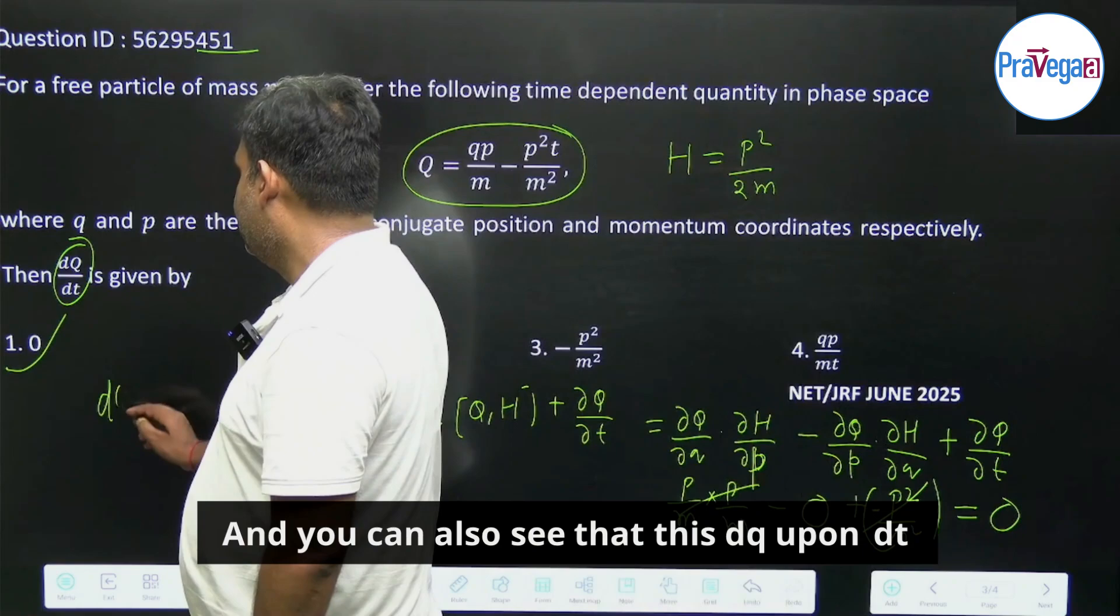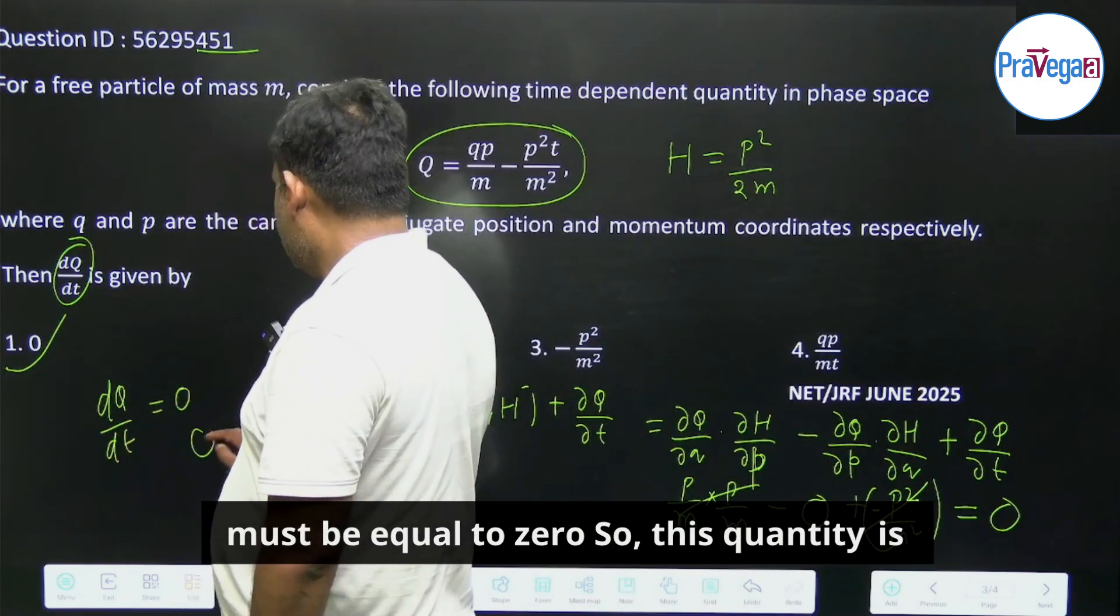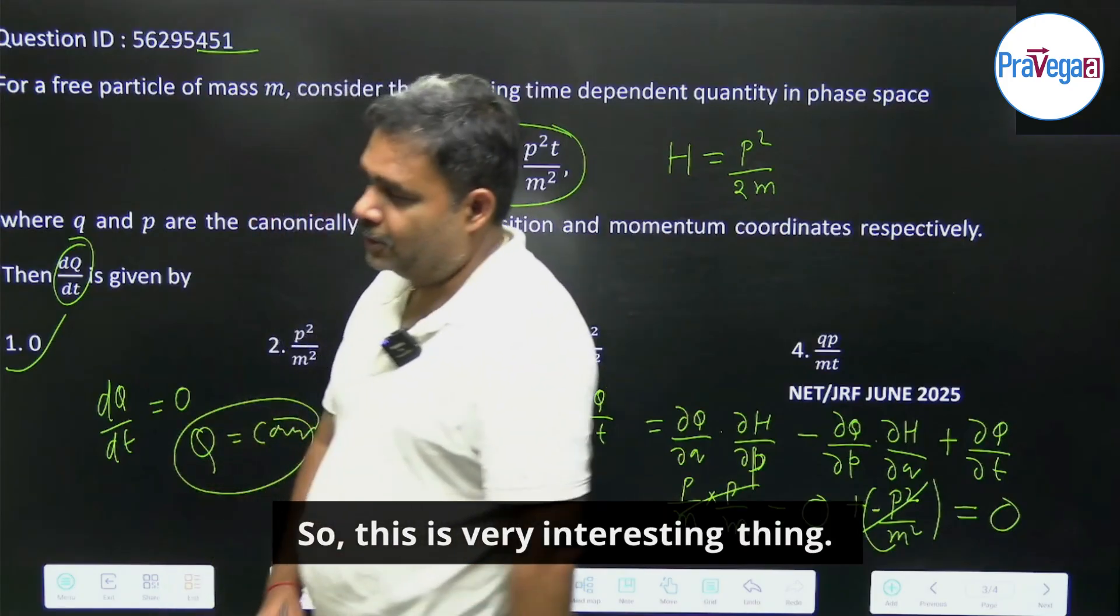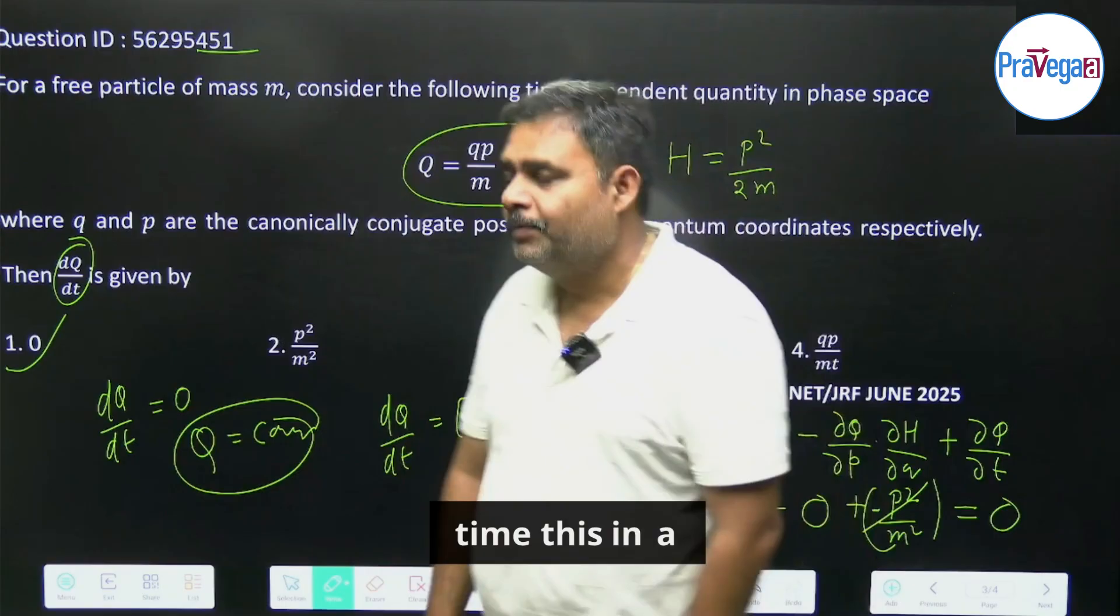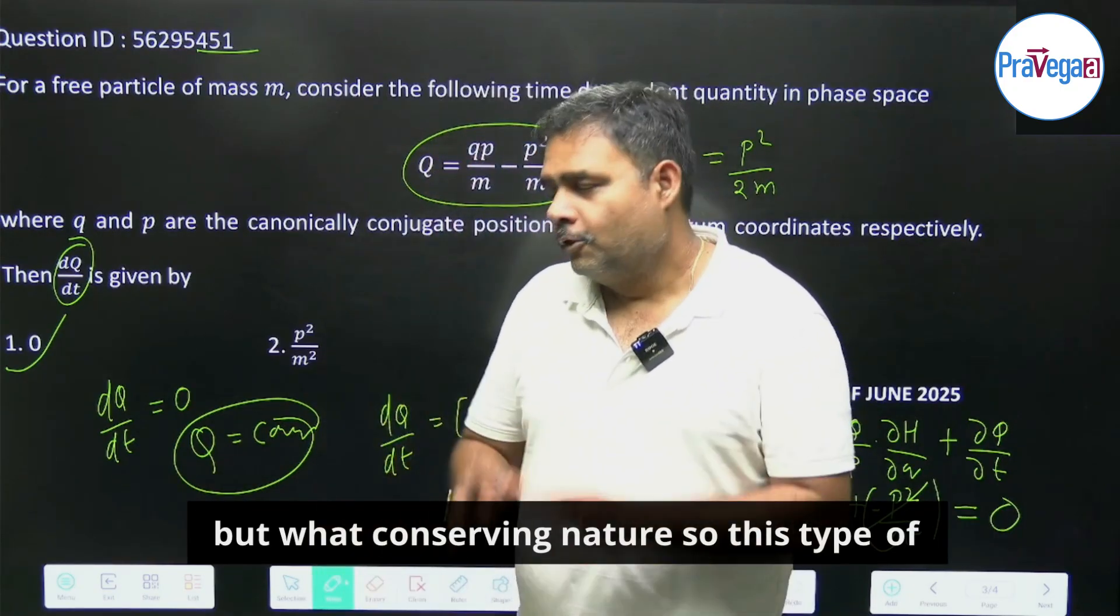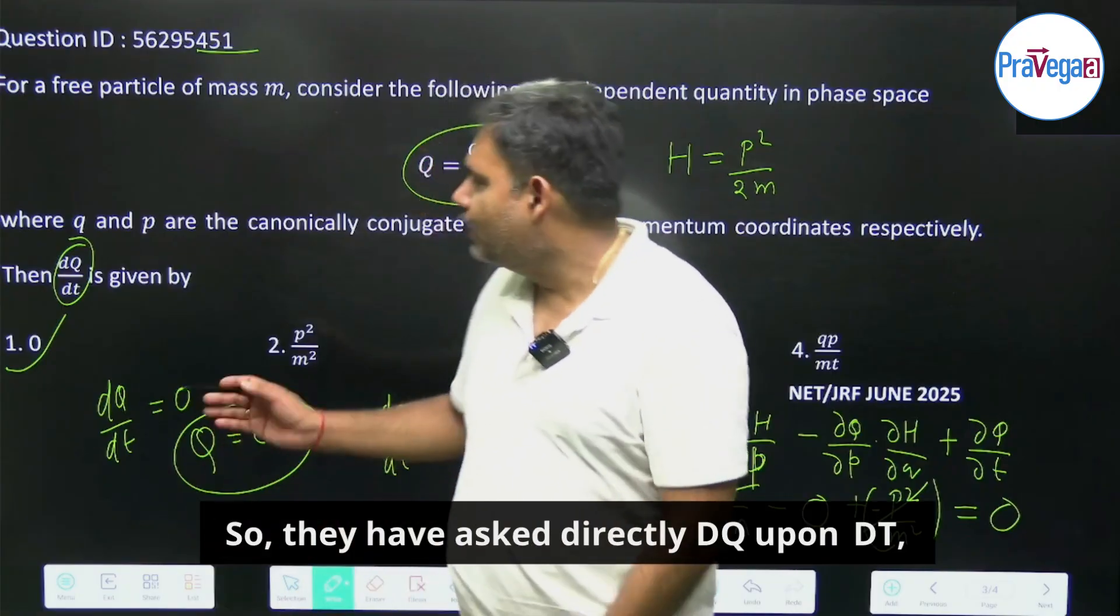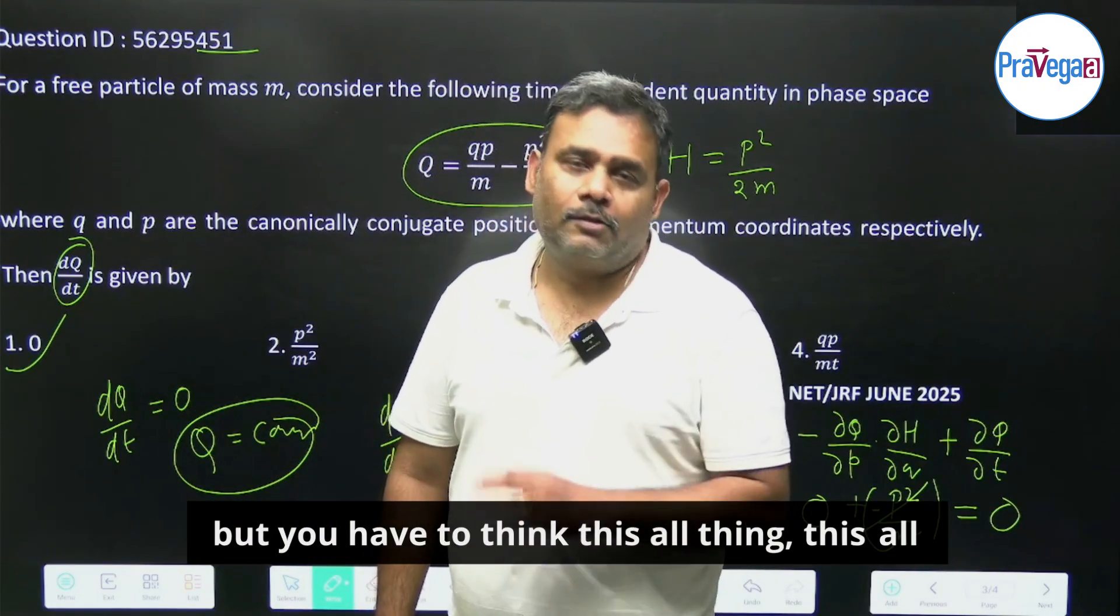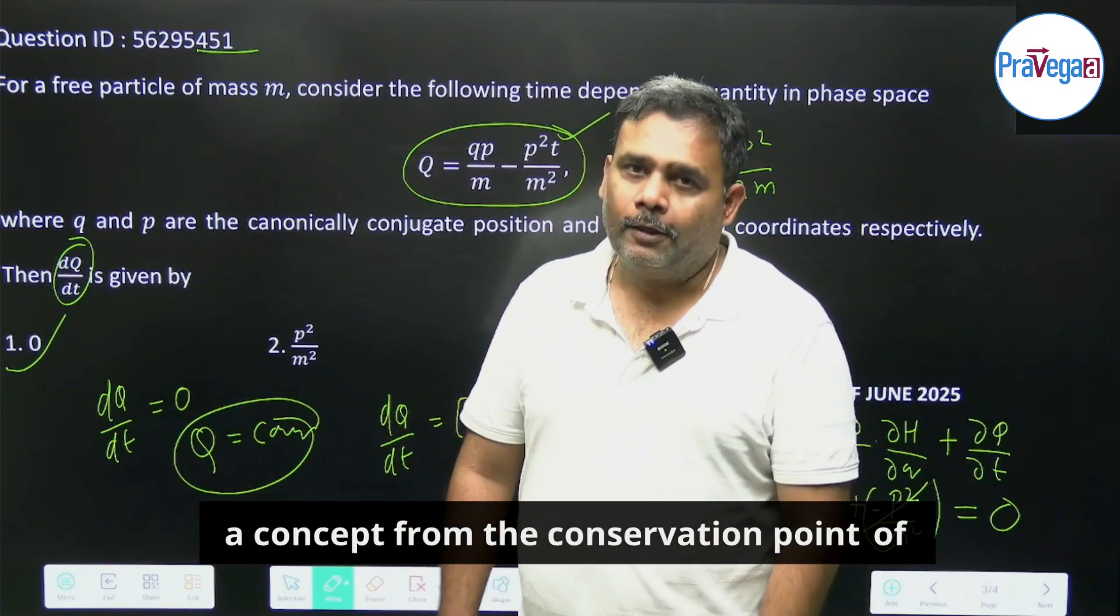And you can also see that this dQ upon dt must be equal to 0, so this quantity is some conserved quantity. So this is very interesting thing. In spite of that, it is explicit function of time, this is conserved in nature. So this type of question is always asked in the examination. So they have asked directly dQ upon dt, but you have to think all this concept from the conservation point of view. Thank you.